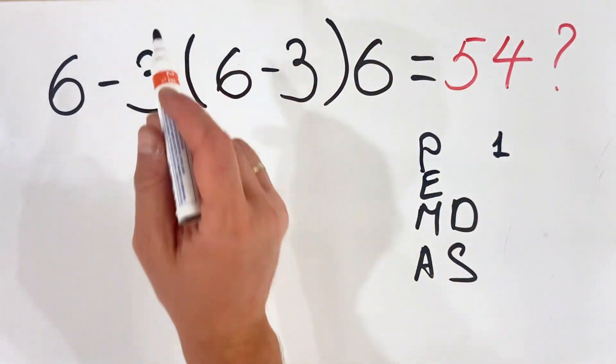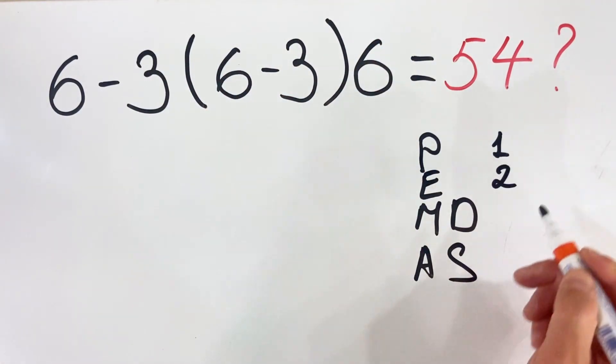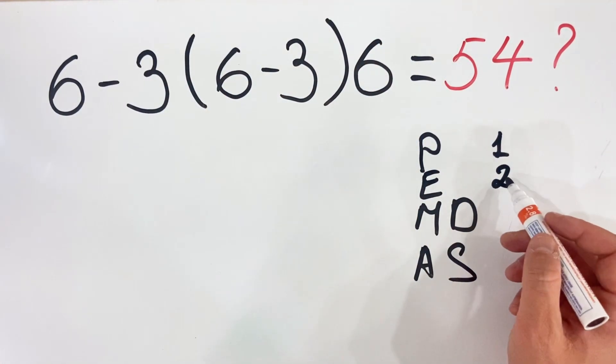E stands for exponents. If we have exponents, we must do them in the second place.